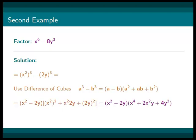After simplifying, we get x squared minus 2y times x to the power of 4 plus 2x squared y plus 4y squared. In conclusion, our answer will be x squared minus 2y times x to the fourth plus 2x squared y plus 4y squared.